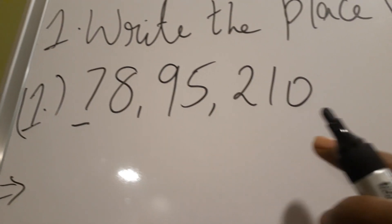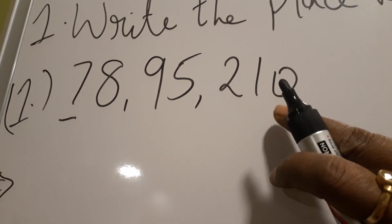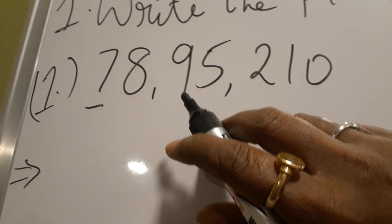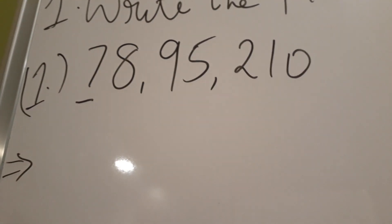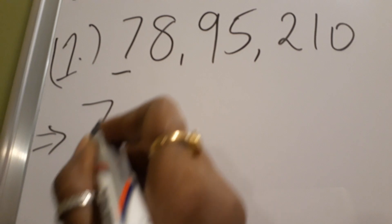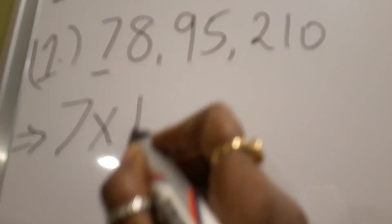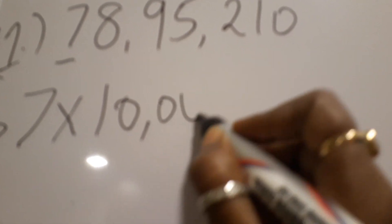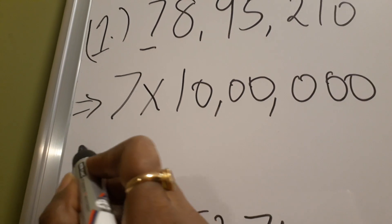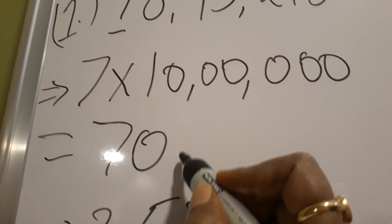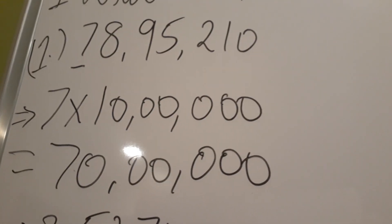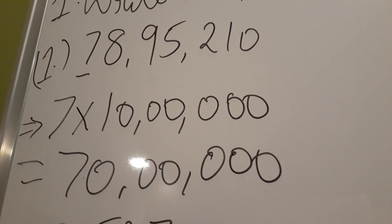So 7 is underlined. 7 is in which place? Units, tens, hundred, thousand, ten thousand, lakh, ten lakh. So 7 is in ten lakhs place. Seven into ten lakh equals seventy lakh. So the place value of 7 in this number is seventy lakh.